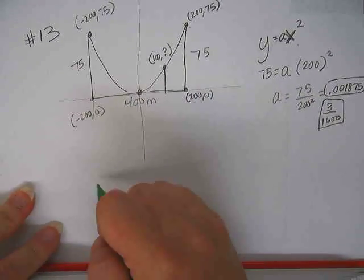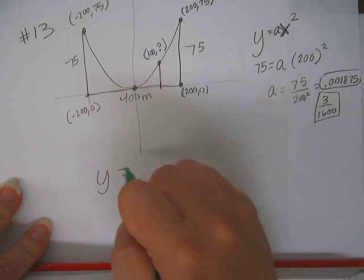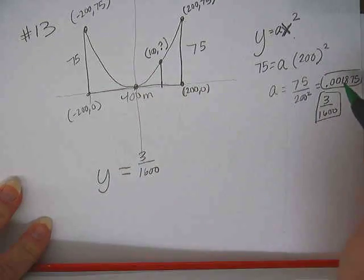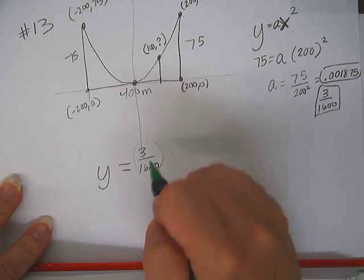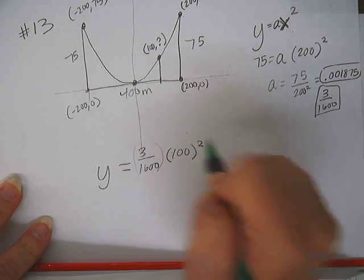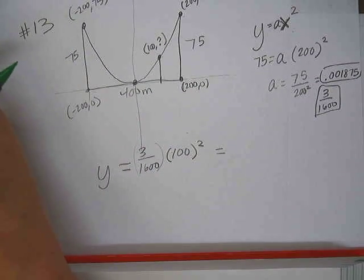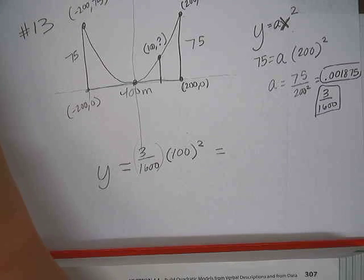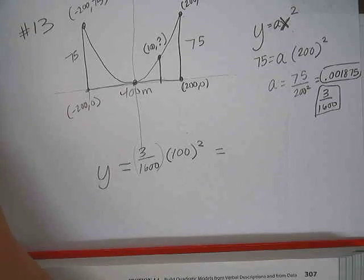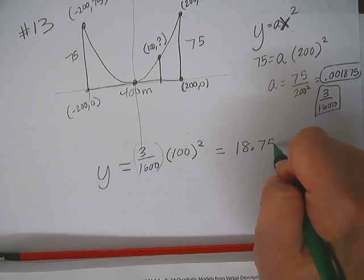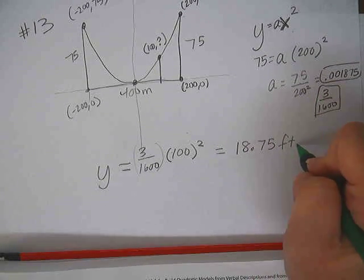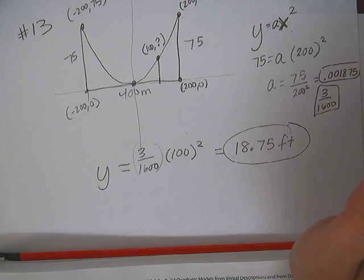So now we want to find the y value when x equals 100. So all we have to do is take our new formula that we just created. Y equals 3 over 1600, or if you'd rather use .001875 for that a value, that's fine. And then x squared. So we're looking for the y value when x equals 100. So take our number that we just did and multiply by 100 squared. So it looks like the cable at that location, at least if I did it right, would be 18.75 feet above the road.